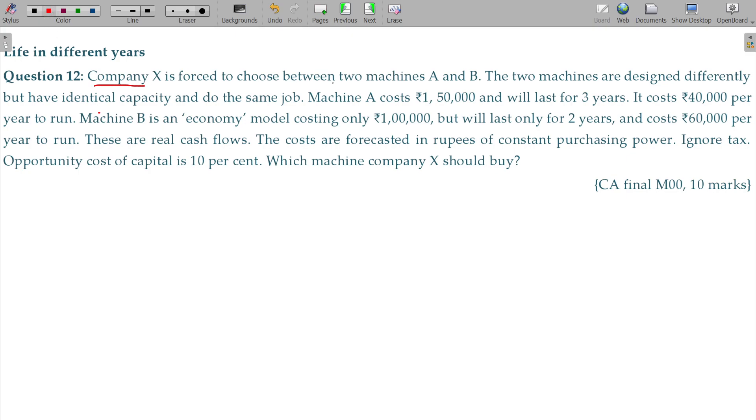Company X is forced to choose between two machines A and B. The two machines are designed differently, but have identical capacity and do the same job. We have 2 machines, A and B.